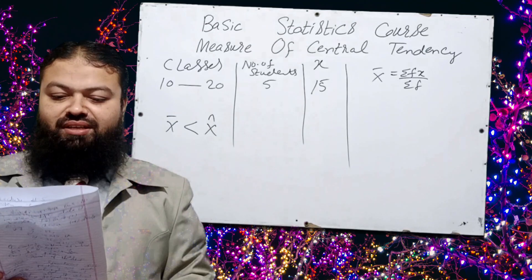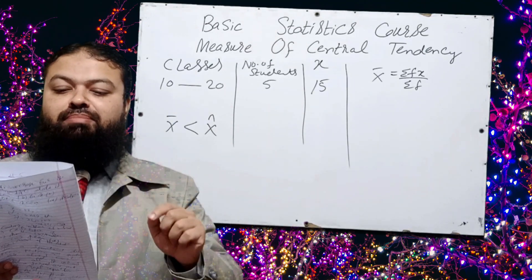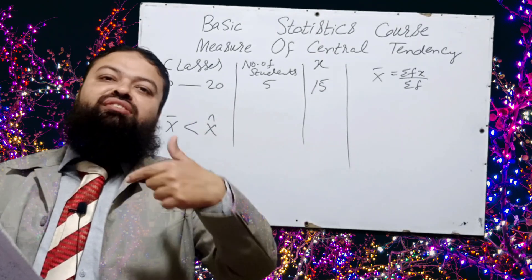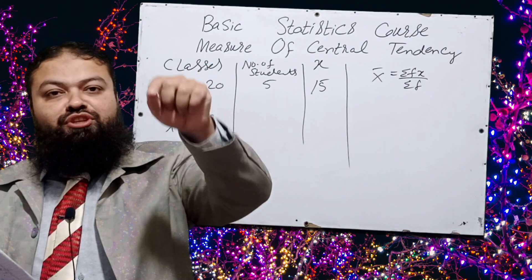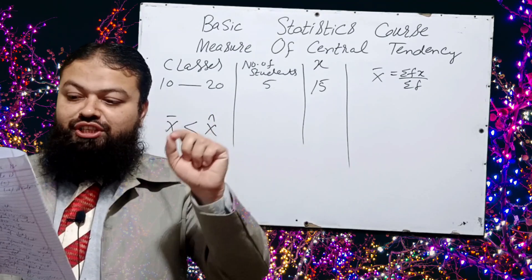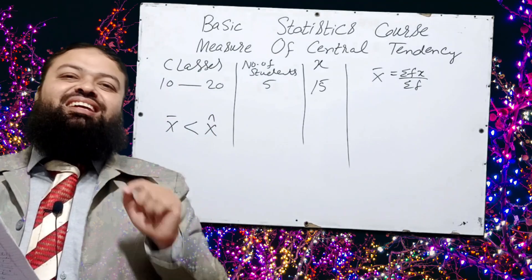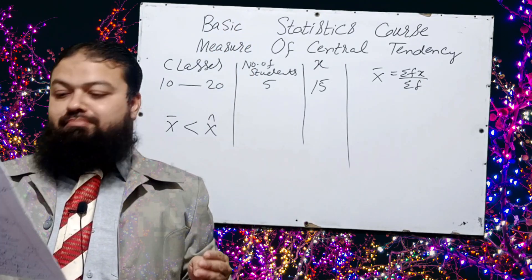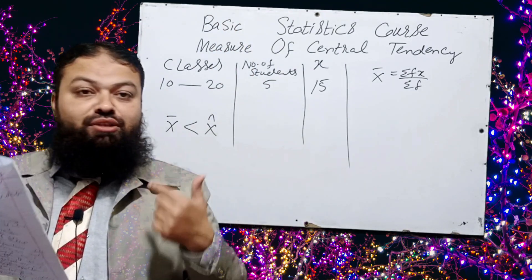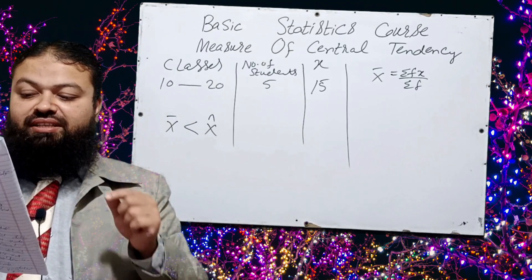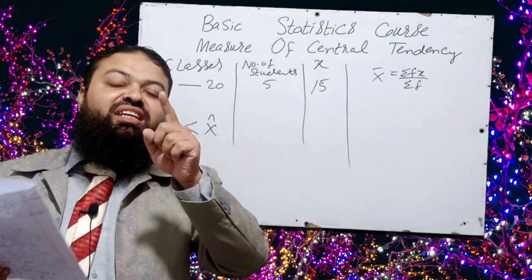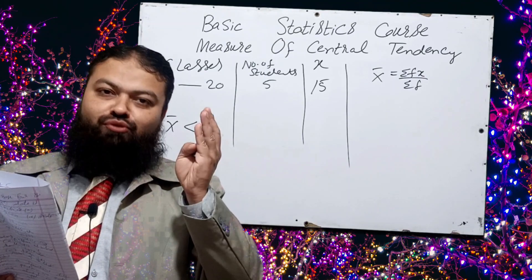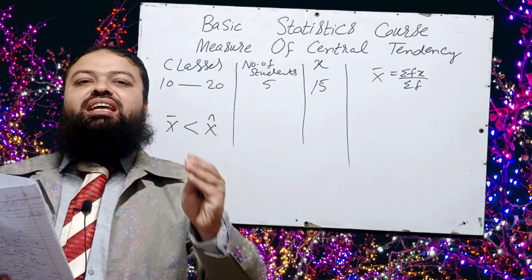Question number five: the mean is affected by — A: change of origin, when we add or subtract values from the original values of x; B: change of scale, when we multiply or divide every value of x by a number; C: both A and B; D: none of the above. Option C is the correct answer — mean is affected by both change of origin and change of scale.